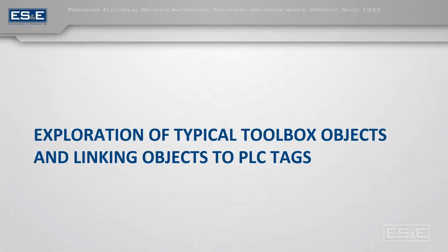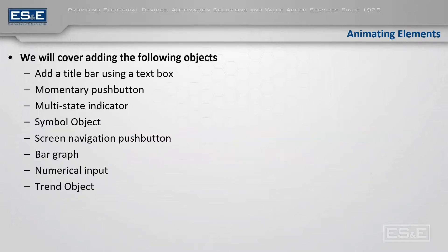The next thing we are going to cover, moving into a virtual machine, will be the exploration of typical objects and how to link them to PLC tags. We're going to do some real development. We are going to be creating a title bar using a simple text box, adding a few momentary push buttons to make a motor start and stop push button, a multi-state indicator, and we are going to add objects from the symbol object library.